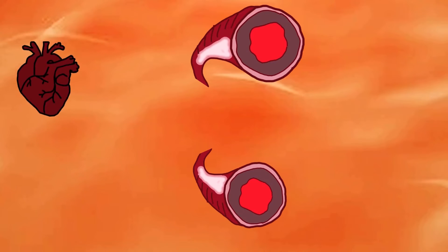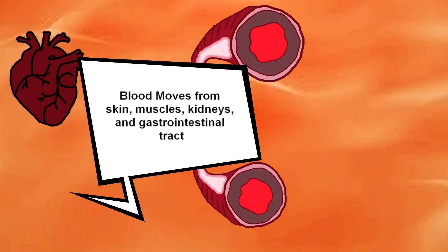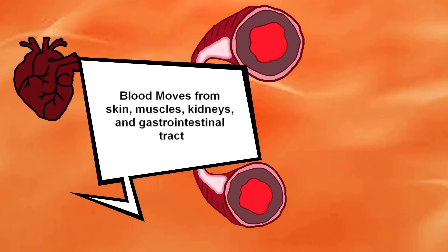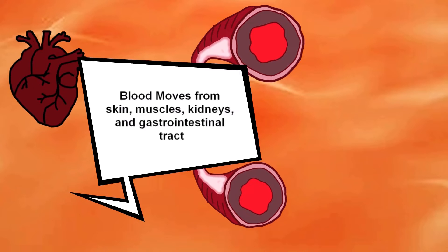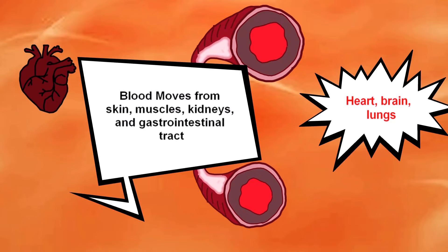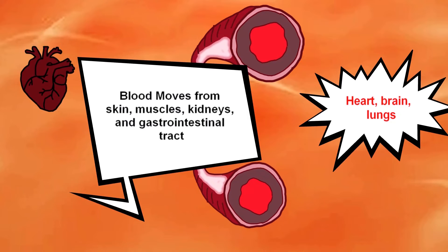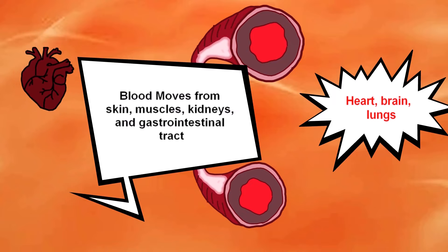Vasoconstriction causes blood redistribution from the skin, muscles, kidneys, and gastrointestinal tract to the heart, brain, and lungs. This means blood moves from less vital organs to the most vital organs.